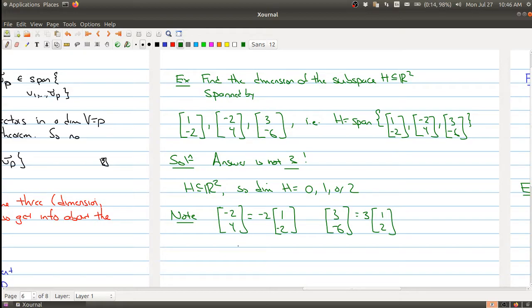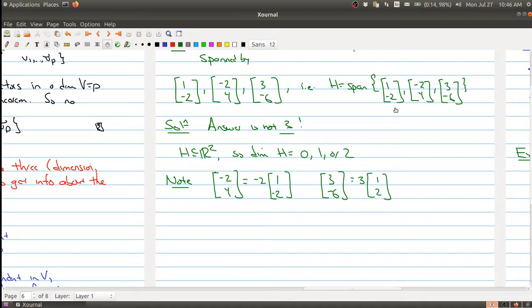And the last vector is equal to 3 times the first vector. All right, so I mean these are very simple linear combinations. And remember we proved the theorem that says if a vector is a linear combination of one of the other ones, you could just pop it out and whatever is left over still spans the same set. So H is actually equal to the span of just the single vector [1, -2], and this implies, because one vector by itself is linearly independent, this implies that this is a basis for H, so this implies that the dimension of H is 1.